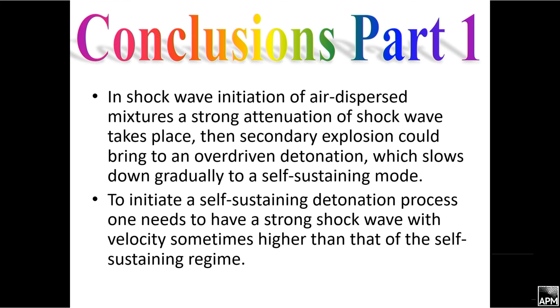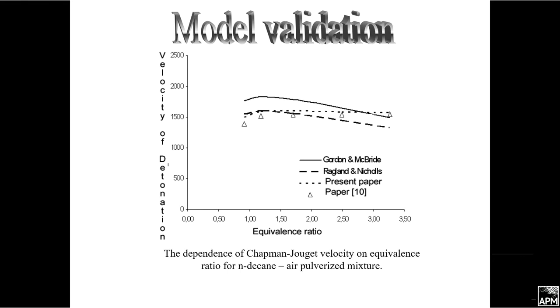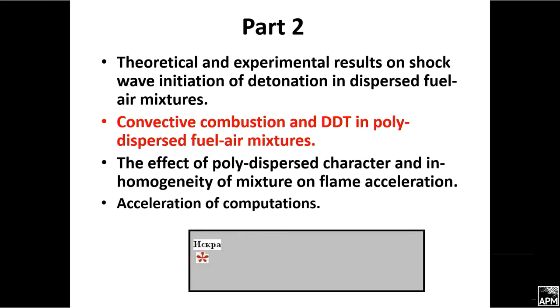Conclusions: in shockwave initiation of air-dispersed mixtures, strong attenuation of shockwave takes place, then secondary explosion could bring to an overdriven detonation which slows down to self-sustaining mode. Second, to initiate a self-sustaining detonation process, one needs to have a strong shockwave with velocity sometimes higher than that of the self-sustaining regime.